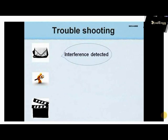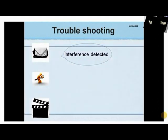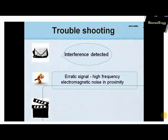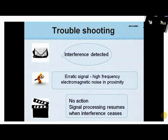If interference is detected, it means the signal is too erratic to be processed due to proximity of electrical equipment generating high-frequency electromagnetic waves. Generally no action is required, as readings either remain unaffected or display dashes if the interference persists. Signal processing resumes when the interference ceases.